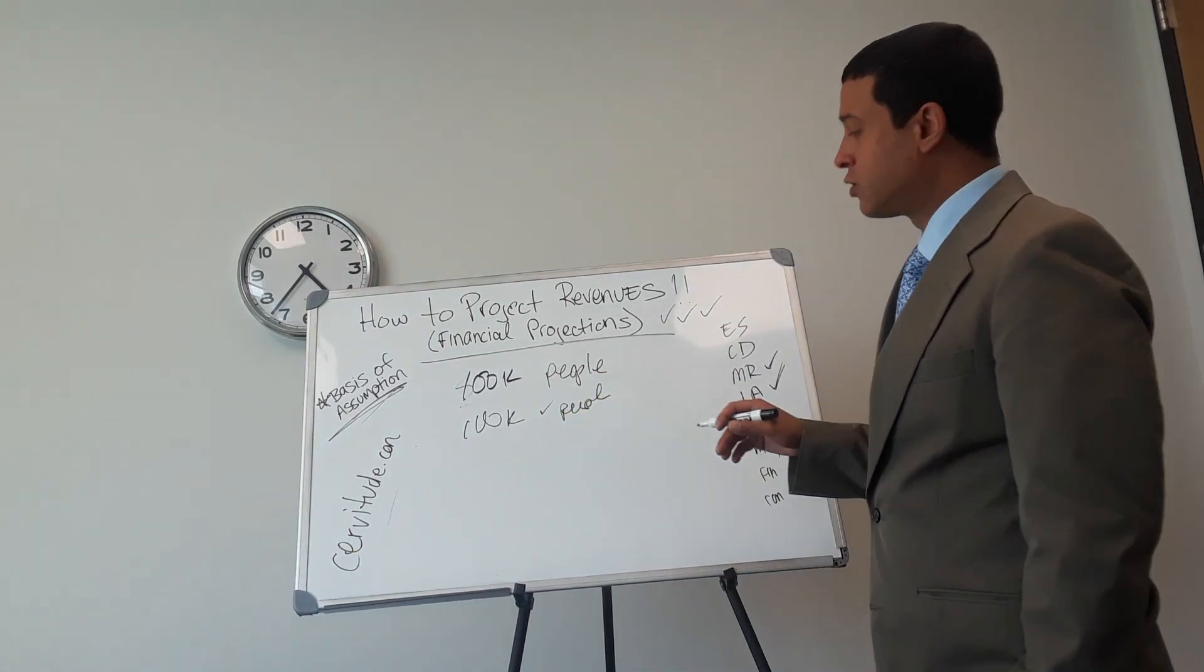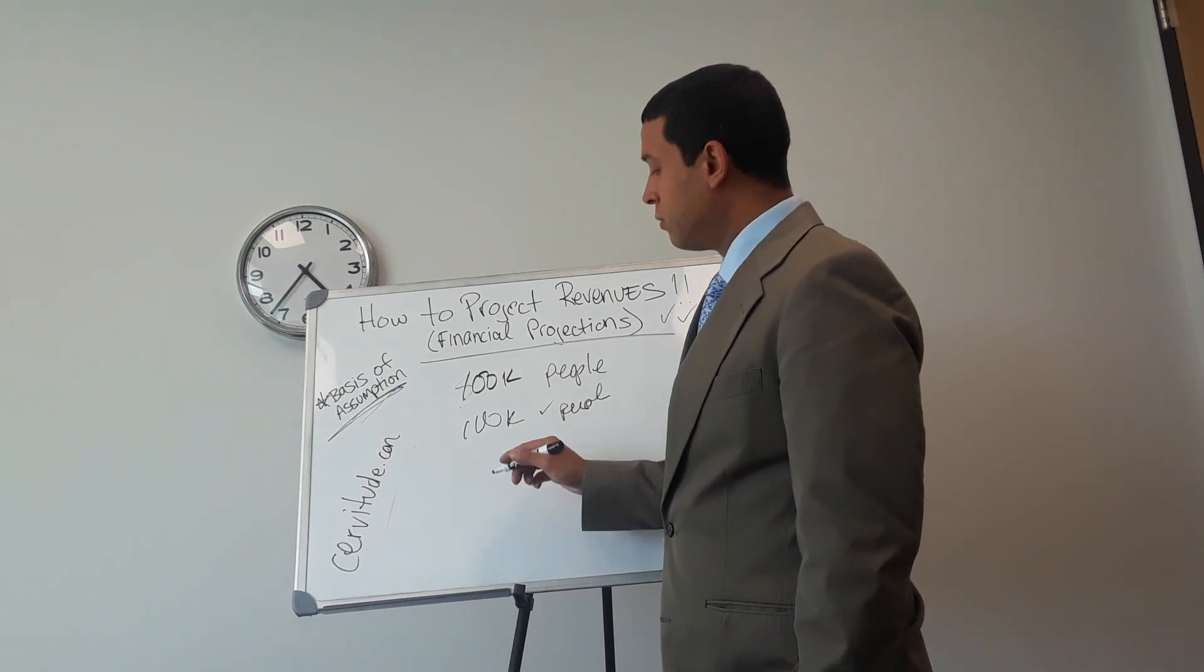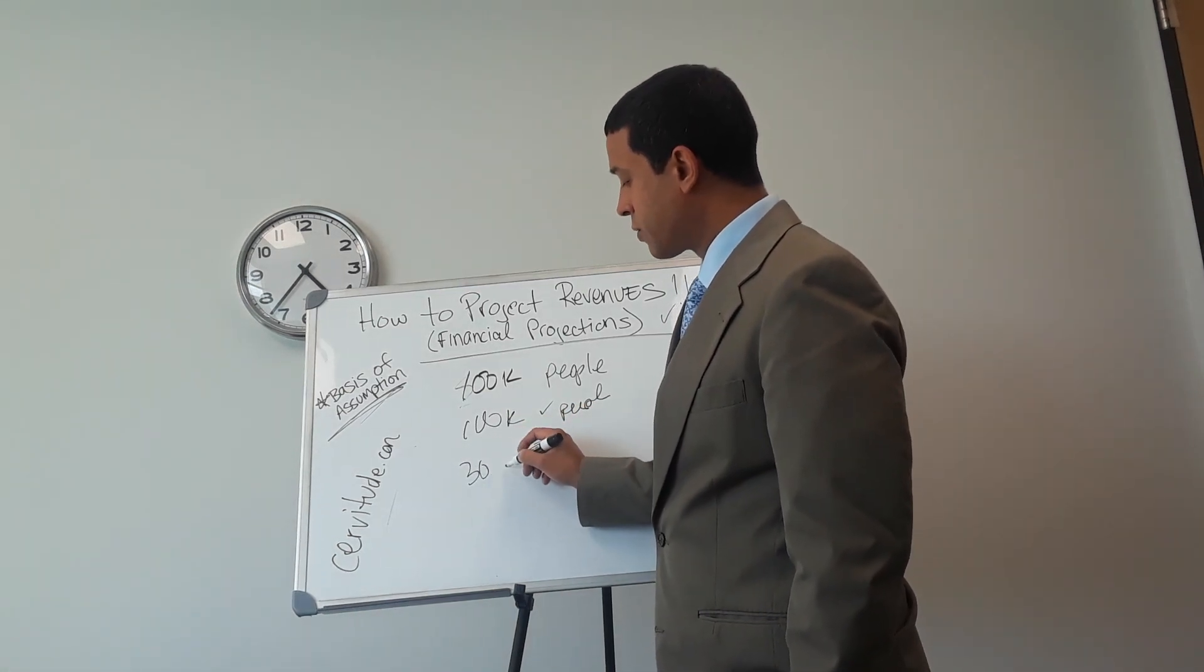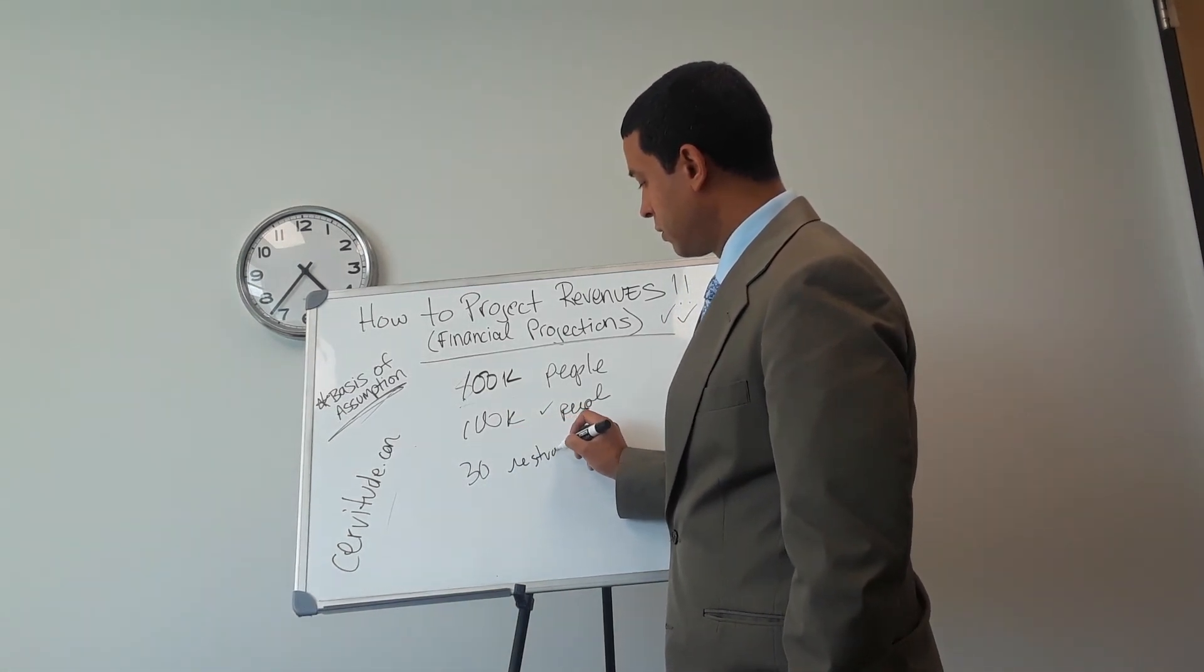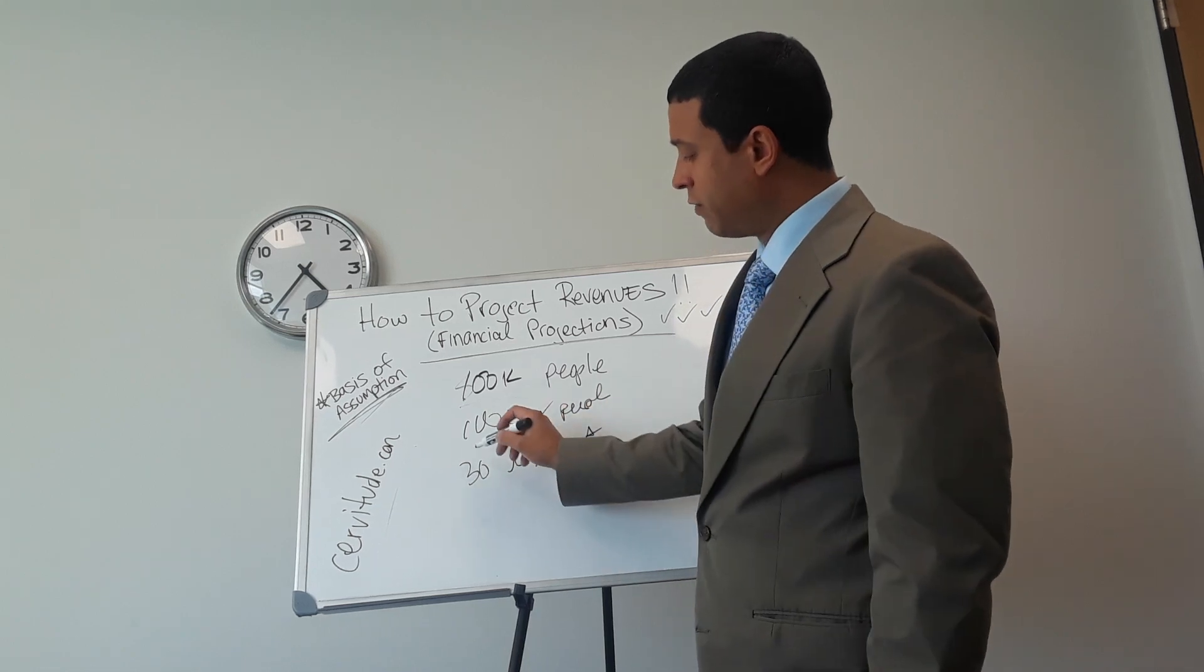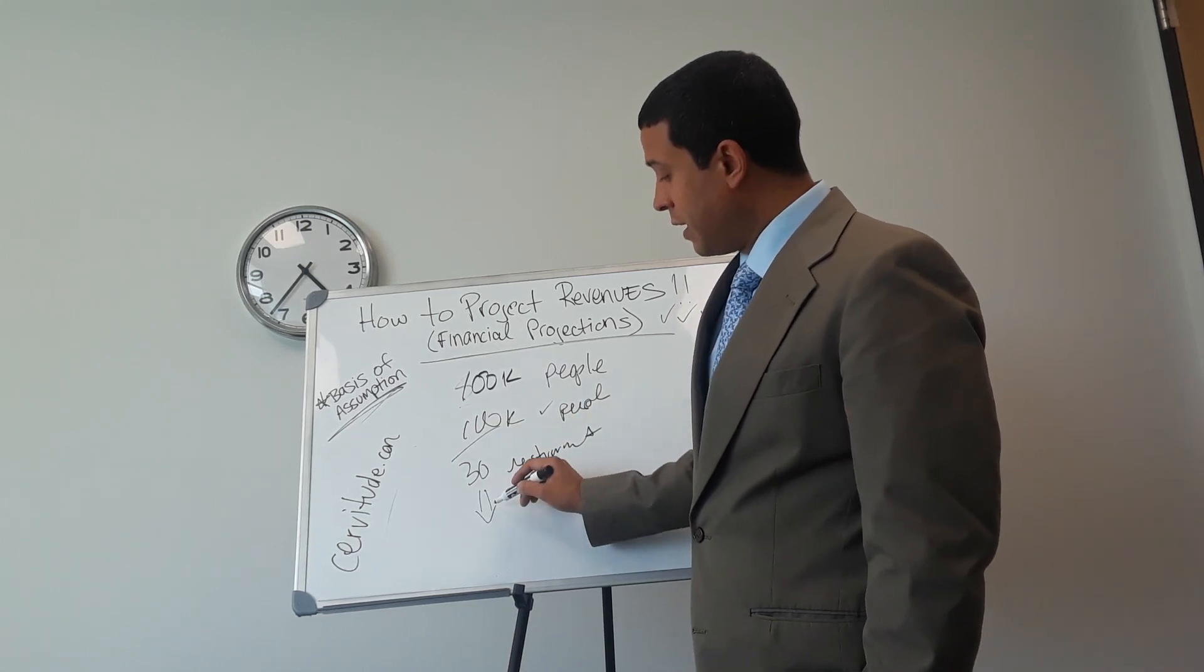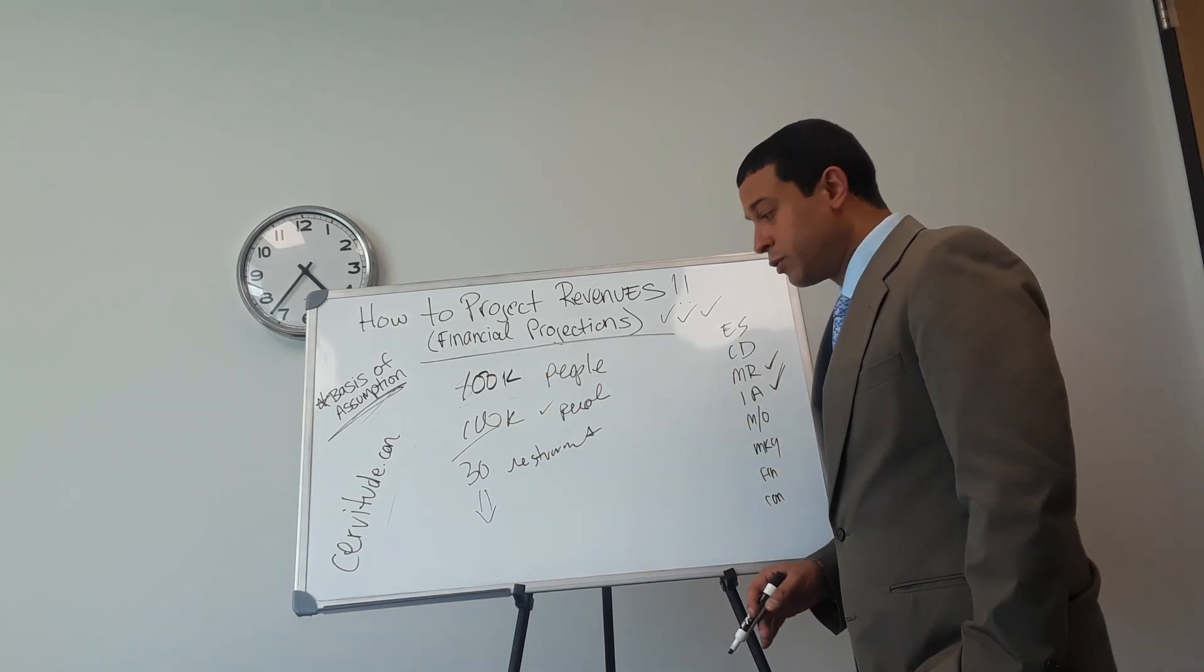And out of those 100,000 that eat out, there's 30 other restaurants in town. So you got to divide this by 30, whatever that number is. That becomes your basis of assumption.